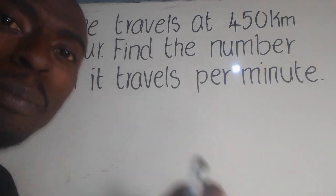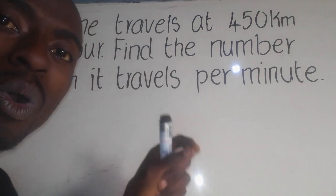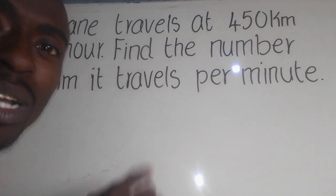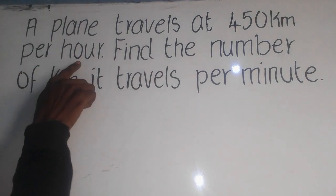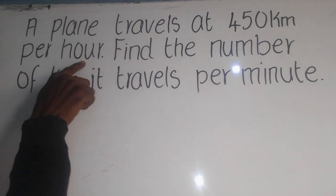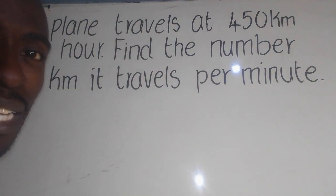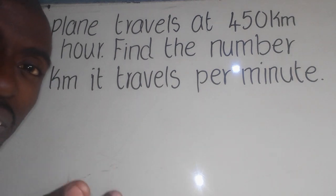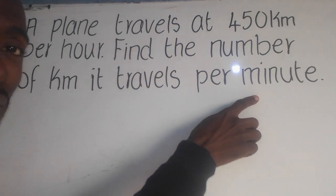We use direct proportion when two quantities are both increasing or decreasing. In this case, which one is decreasing? It is the time. We have said this per hour, meaning one hour. Now, one hour is decreasing to per minute, meaning one minute. Take note that there is a conversion of units here from hours to minutes.